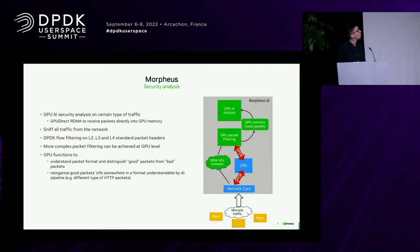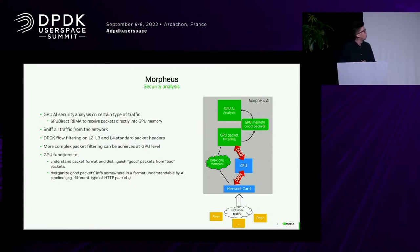When good packets are recognized, they are stored in GPU memory in a format convenient for the Morpheus pipeline to access them, and then inferencing can start.